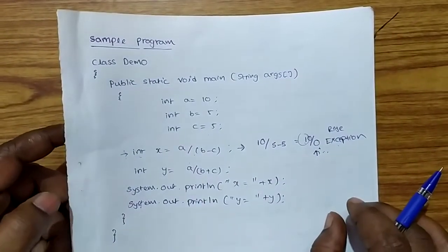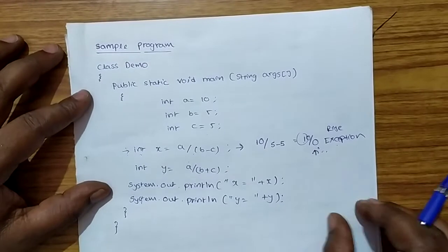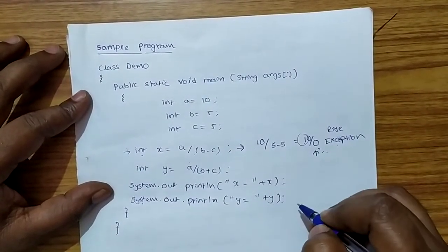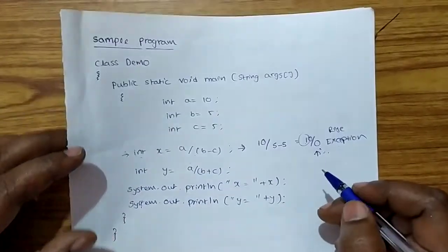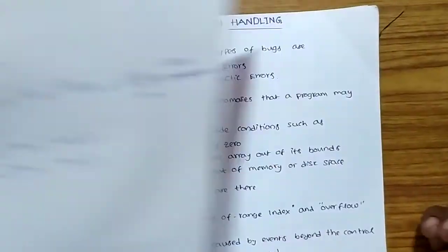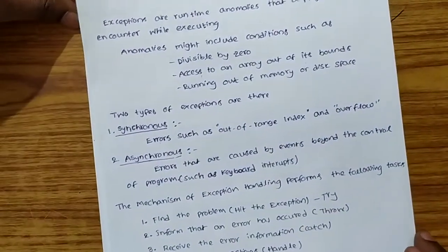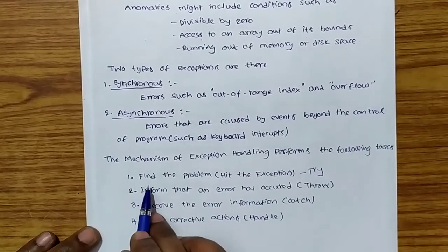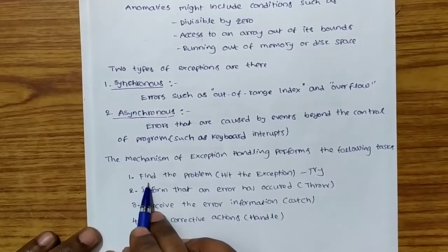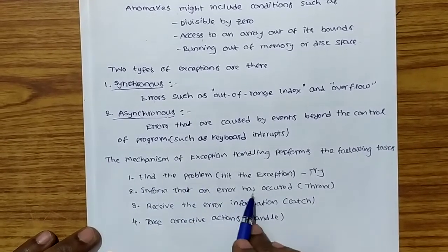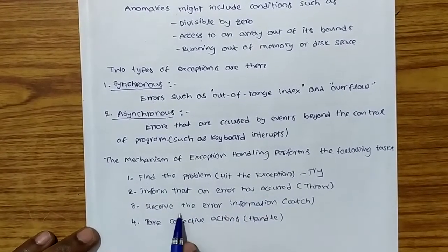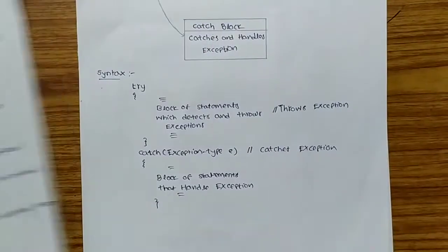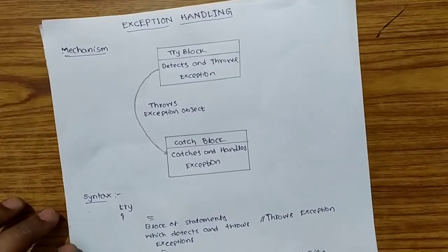Though there is an error in the program, exception handling informs that there is an error and allows the remaining lines to execute as normal. Exception handling mechanism performs four tasks: find the problem, inform that an error has occurred, receive the error information, and take corrective actions. Here we have the exception handling mechanism.